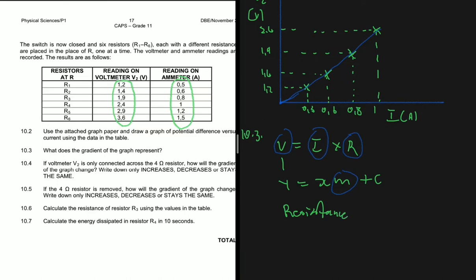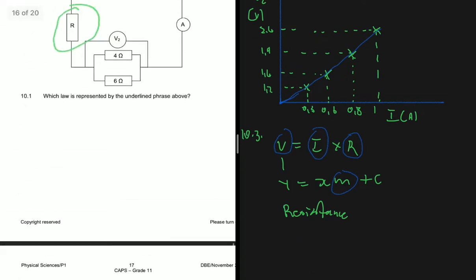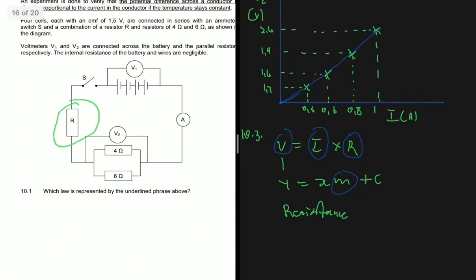But which resistance? Is it R total, the resistance in series, or the resistance in parallel? It is the resistance in parallel, because that is where our voltmeter is connected — it's connected across the resistors in parallel. So it's the resistance of the parallel combination.